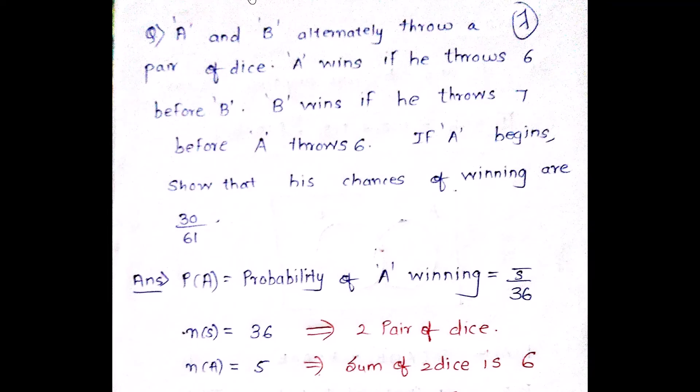There are two people, A and B, which are throwing basically a pair of dice. In that, A will win if A throws 6 before B, and if B wins, if B throws 7 before 6. So if A begins, show that the chances of winning are 30 by 61.